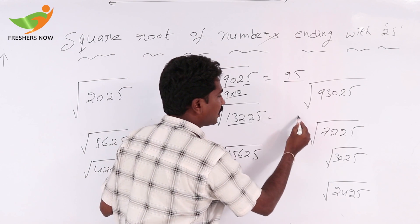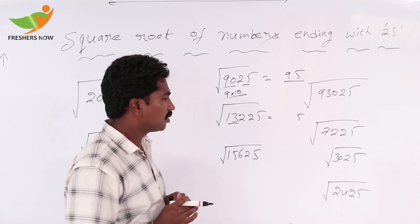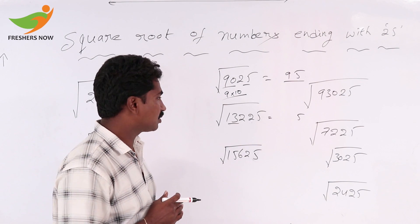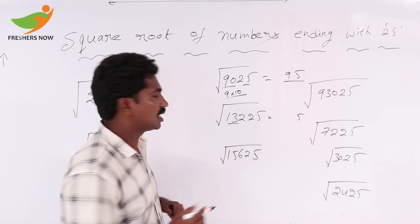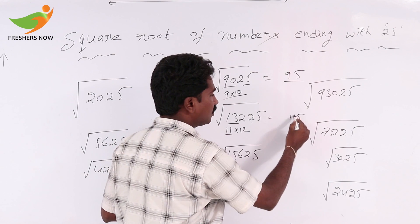13225, 25 is 5. 132, 132 is the multiple of two consecutive, right? Can we write 132? 11, 12 here. So 11 into 12. Here the small number is 11. So 425.